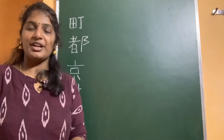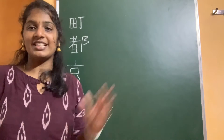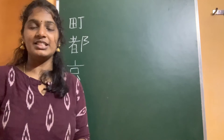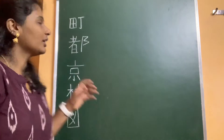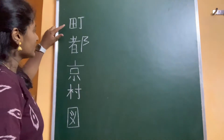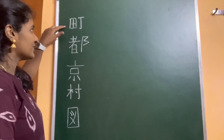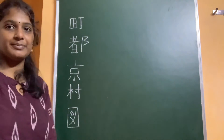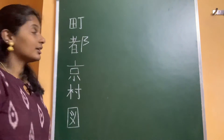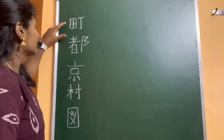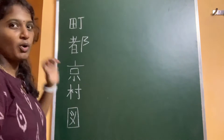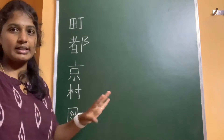Konnichiwa. Now we are going to see the next 5 kanjis for JLPT N4. This first kanji means Machi. Machi means town, small town or district.